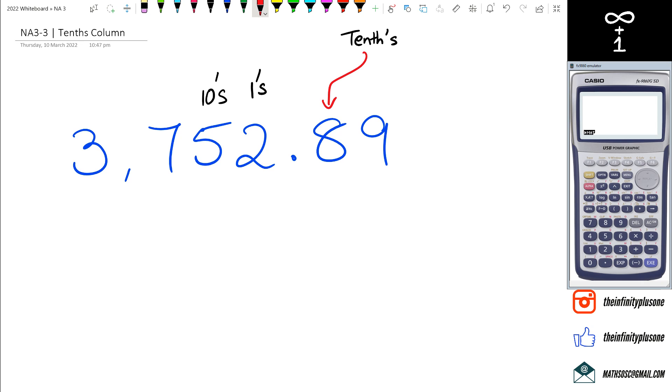You might be wondering, well how does that happen? Think about it like this: if we were to write 8 tenths, 8 tenths is the same thing as saying 8 over 10.